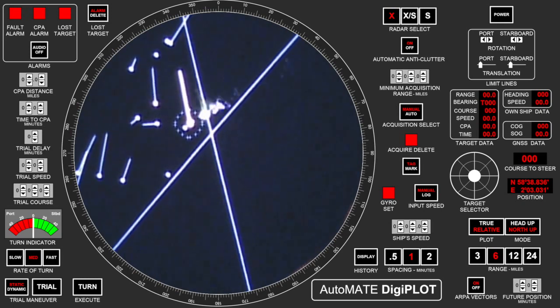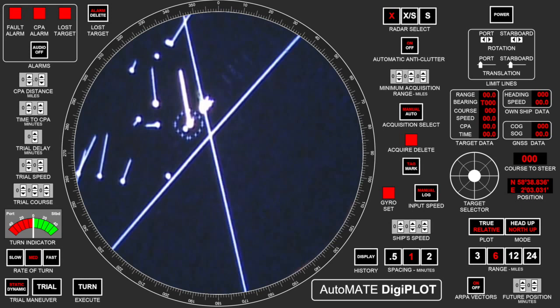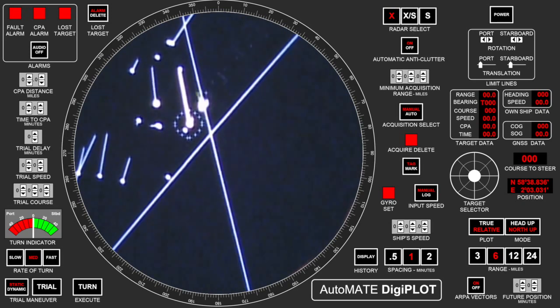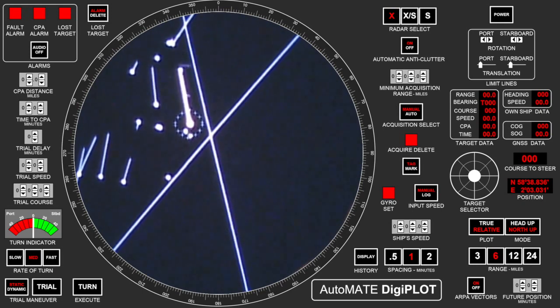You can see the separation of the tankers going toward Rotterdam, all going about the same speed. The limit lines are shown also. Occasionally you'll have a buoy or a vessel that will be right more or less on the line and partially acquire.